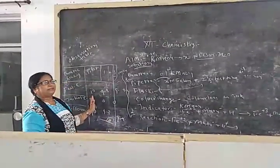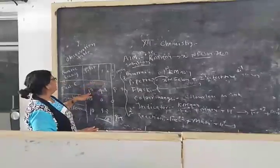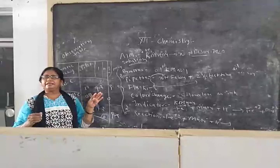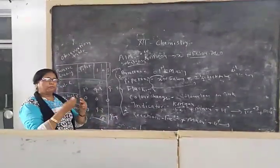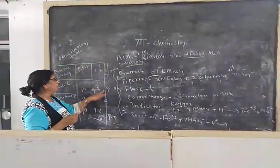So after taking burette reading, you are getting the idea where you are going to stop. If you are getting the reading at 10, and you are not getting the reading at 9, within 9 and 10 you are going to move. So again you are going to fill the burette at 0 ml.